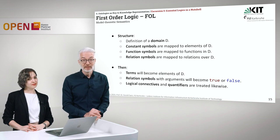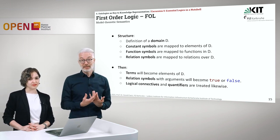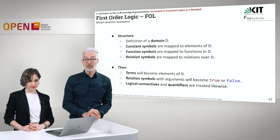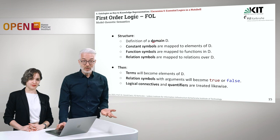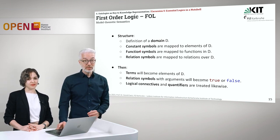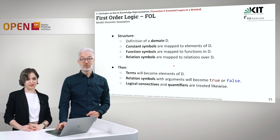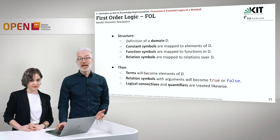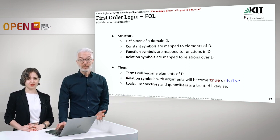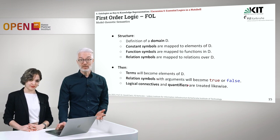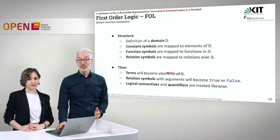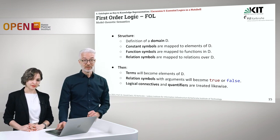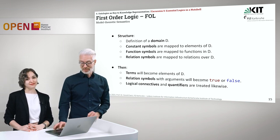For model-theoretic semantics in first-order logic, we need to define a domain over which we are talking. Our constant symbols must be mapped to elements of the domain, and our function symbols likewise. All terms we have defined automatically become elements of our domain D, and the relation symbols with arguments over that domain immediately become true or false. We treat logical connectives and quantifiers alike and arrive at the result of the interpretation.